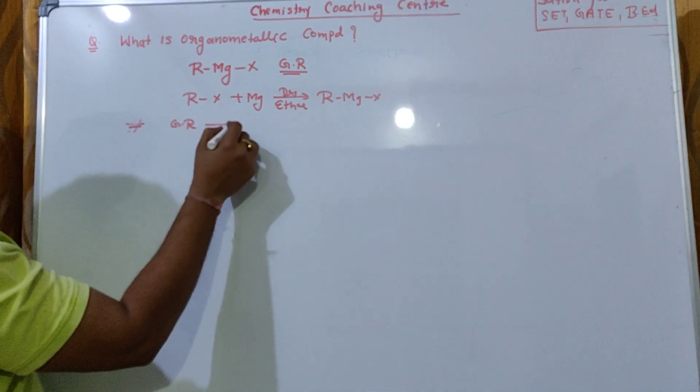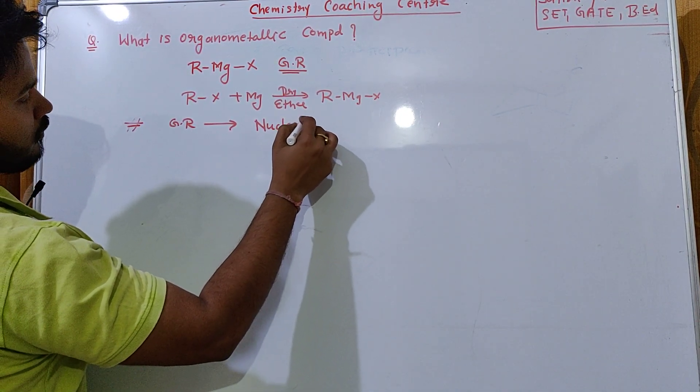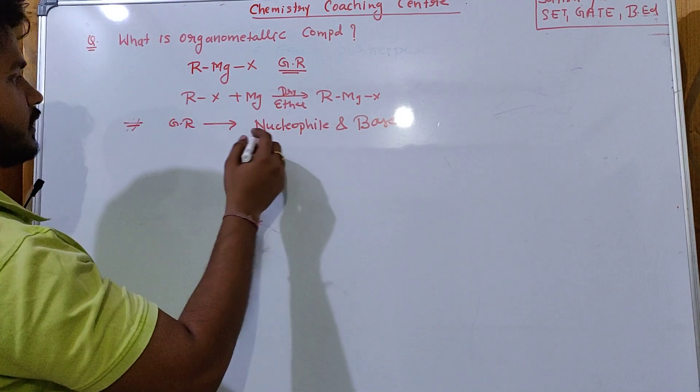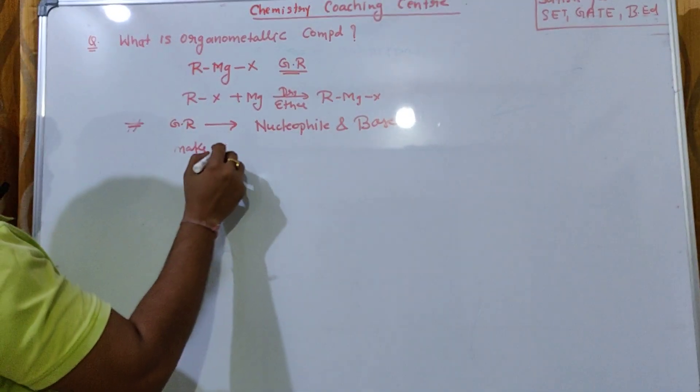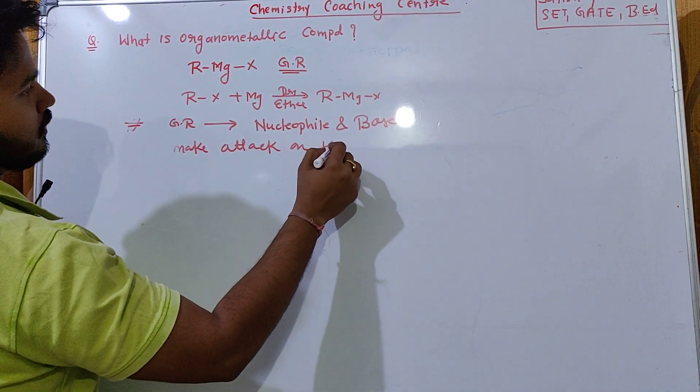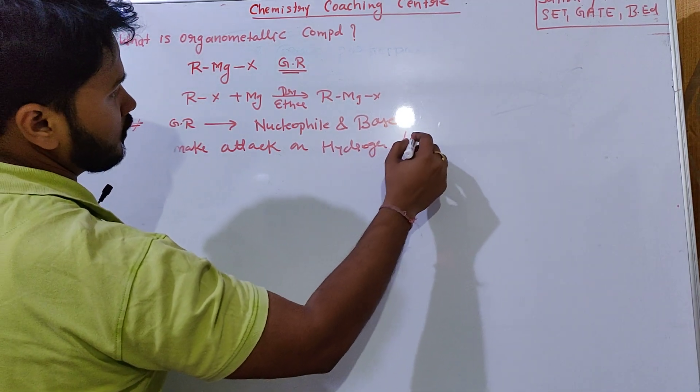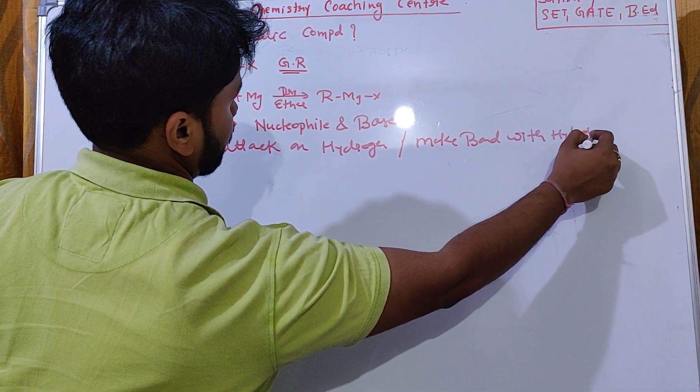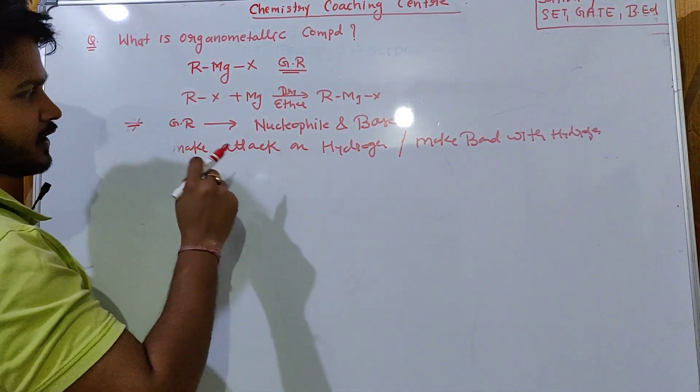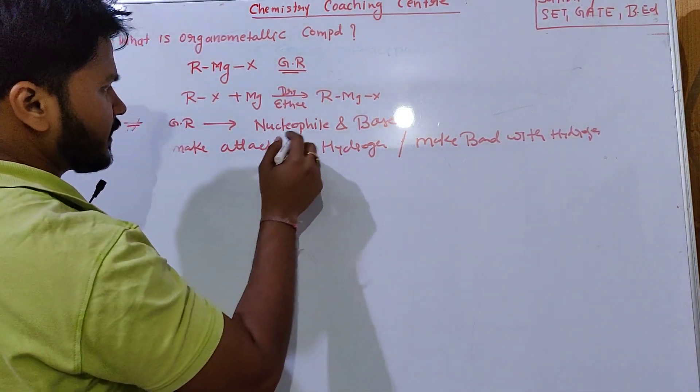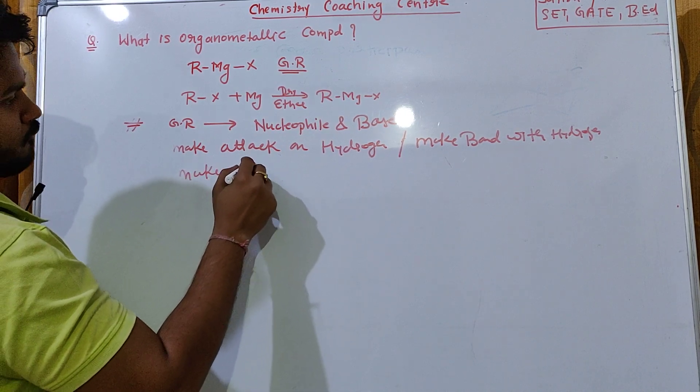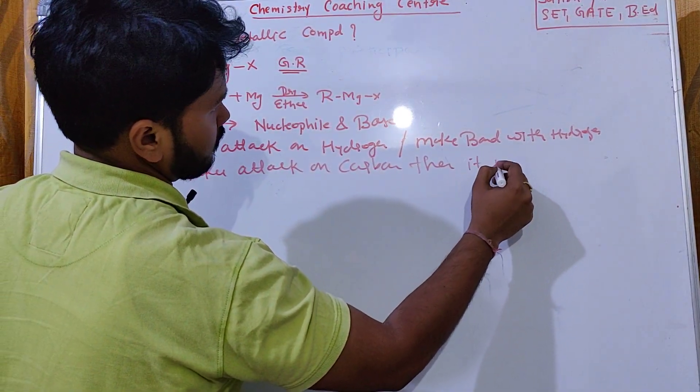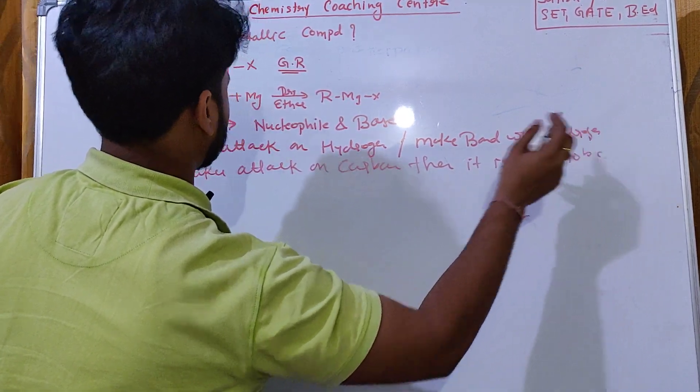Now the Grignard reagent can act as a nucleophile and a base. When the Grignard reagent makes attack on hydrogen or makes bond with hydrogen, then it is called as a base.